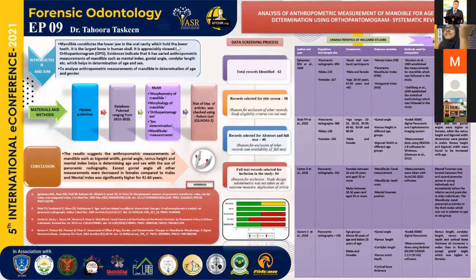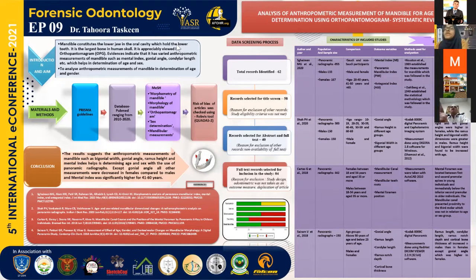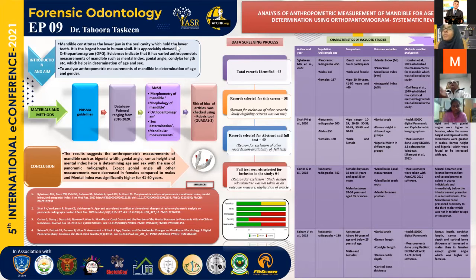The data screening process was also done. Total records identified were about 62; records selected after title screening were about 58. Records with full abstract and full text reviewed were nearly 40. The full text records meeting the inclusion criteria were four. Many articles were excluded because they showed odontometric measurements, whereas we were considering anthropometric measurement of the mandible alone.